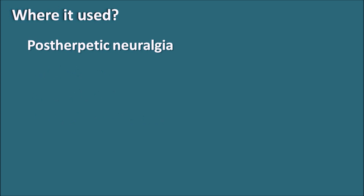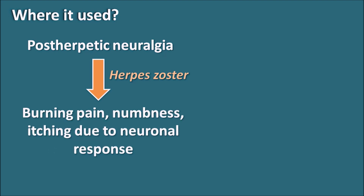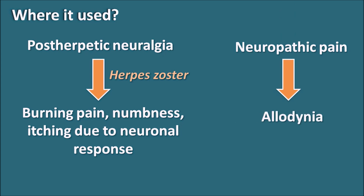Where is Gabapentin used? Gabapentin can be used in post-herpetic neuralgia — a condition where pain is produced after herpes zoster infection. In this post-herpetic phase, patients experience burning, numbness, and itching due to enhanced neuronal response. Since Gabapentin inhibits the neuronal response by inhibiting neurotransmitter release, it suppresses this exaggerated neuronal response and controls pain sensation. Similarly, Gabapentin can also be used in neuropathic pain, which is associated with allodynia — an exaggerated neuronal response causing enhanced pain sensation without any external damage.